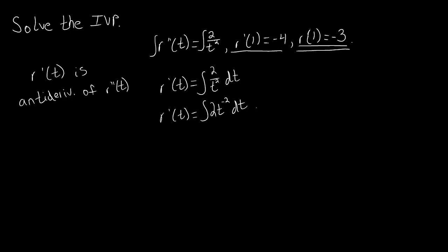So what we're going to get is that this integral is going to be 2t to the negative 1 over negative 1, plus c. The integral of 2t to the negative 2 is found by adding 1 to the power: negative 2 plus 1 is negative 1, and then we divide by negative 1. So what we actually get is that this equals negative 2 over t plus c. This is the general anti-derivative for r prime of t.